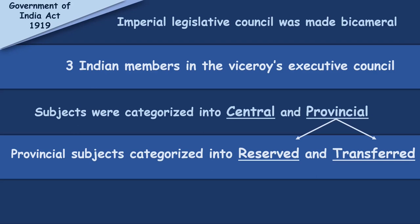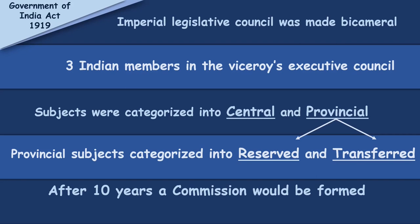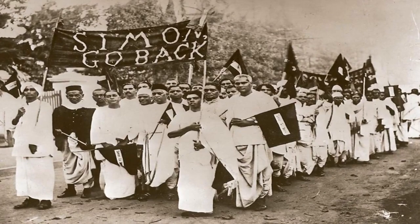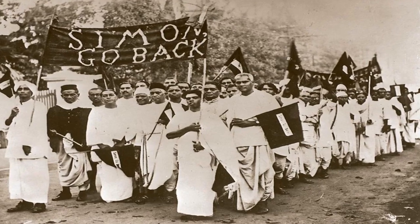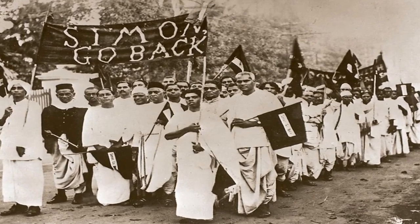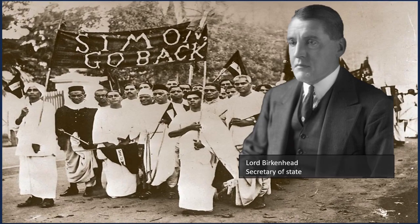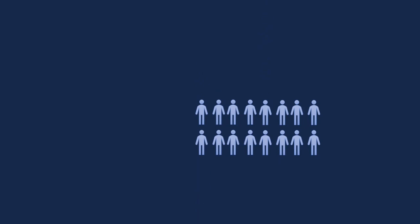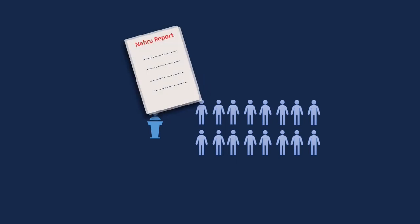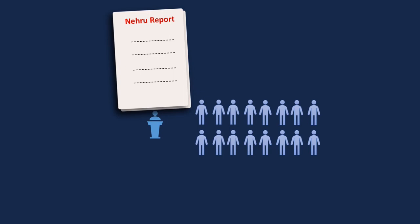The Act also provided that after 10 years, a commission would be formed to analyze the working of the Indian government. This resulted in the Simon Commission of 1927. When Simon arrived, he met with strong resistance across the country — people protested with black flags and the slogan 'Simon Go Back.' Lord Birkenhead, the Secretary of State, challenged Indians to draft a constitution acceptable to all parties. In response, a conference of all parties was called, and a committee under the chairmanship of Motilal Nehru drafted a constitution, submitting the Nehru Report of 1928.